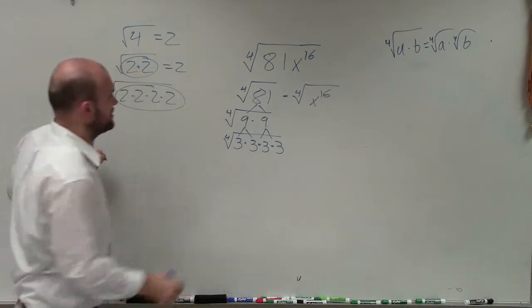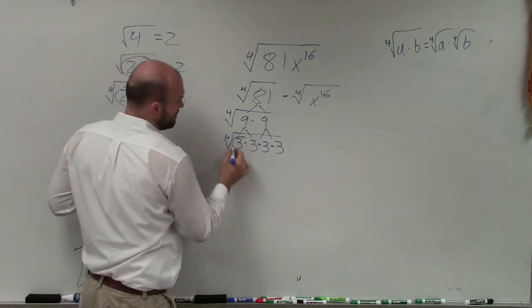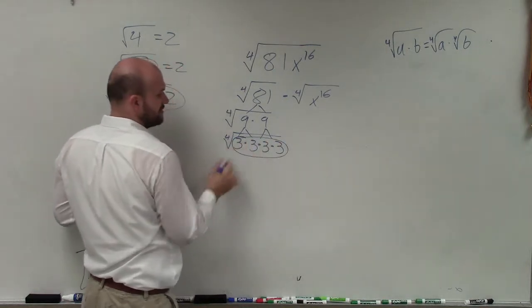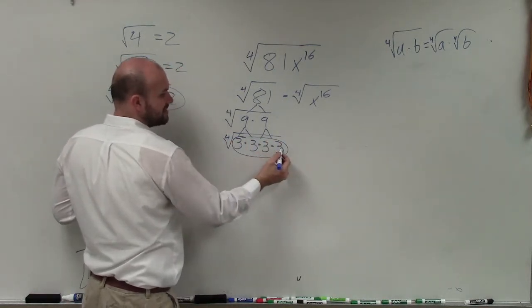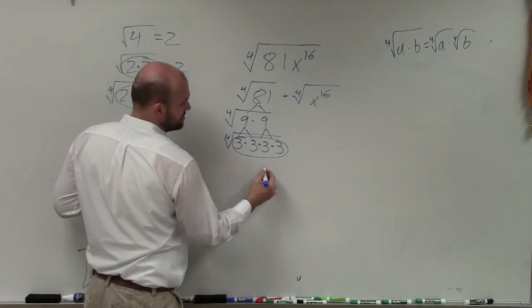Just like with square root, you're looking for two numbers. Well, the four numbers that I'm multiplying by myself here is going to be 3. So the fourth root of 3 multiplied by itself 4 times is just going to be 3.